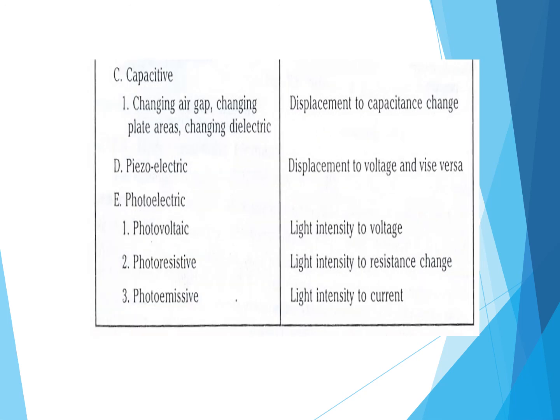In capacitive type: changing area gap, changing plate area, and changing dielectric all convert displacement to capacitance change. Piezoelectric type converts displacement to voltage and vice versa. In photoelectric type: photovoltaic converts light intensity to voltage; photo-resistance converts light intensity to resistance change; photoemissive converts light intensity to current. Streaming potential type converts flow to voltage.